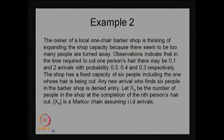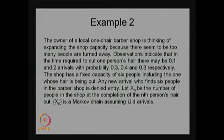Observations indicate that in the time required to cut one person's hair there may be 0, 1, or 2 arrivals with the probability 0.3, 0.4, and 0.3 respectively. This information is very important — during one person's haircut, the probability that no people turn up is 0.3, one person turns up is 0.4, and two arrivals is possible with probability 0.3. The summation of probabilities is one, and these are the only three possibilities: zero, one, or two arrivals.